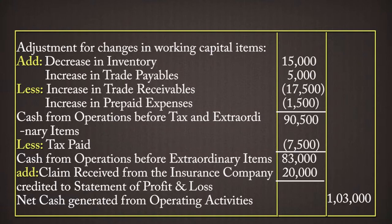Operating profit before working capital changes is Rs. 89,500. Now we adjust for working capital items — receivables, payables, and inventories. Inventory was Rs. 1,12,500 in 2017 and Rs. 97,500 in 2018 — a decrease of Rs. 15,000. Since assets decreased, we add Rs. 15,000.